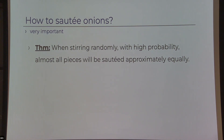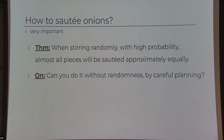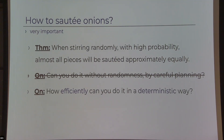You look at this and ask the natural question: can we do it in a deterministic, carefully planned way? And the obvious answer is yes — give me an army of onion flippers, a thousand people, each with a thermometer, flipping each piece every 10 seconds. It's going to come out great. But the interesting question is: how efficiently can we do it deterministically? How much does it cost?